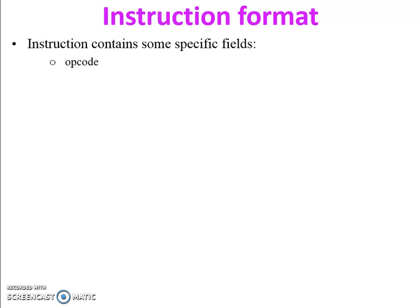An instruction format contains some specific fields. The first one is opcode — opcode means operation code, which kind of operation you have to perform on data. Source operand means before performing the operation, data will be stored in one operand, two operands, or three operands — that operand is called the source operand.